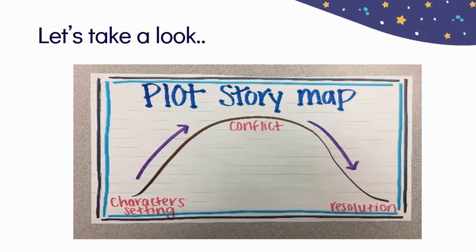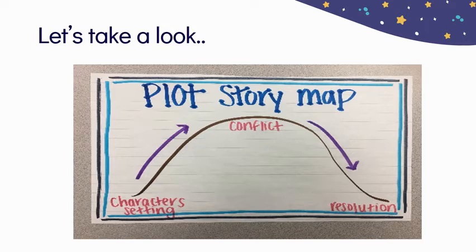Let's take a look. You remember when we did the plot mountain — the plot story map for fiction text. We started with the characters and setting, and then at the top of the mountain was the conflict or the problem in the story. And at the bottom, at the end, we talked about the resolution or the solution to the problem.